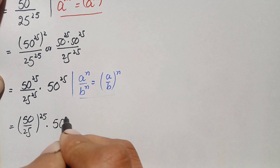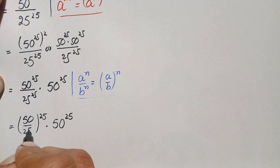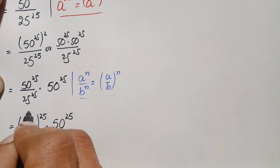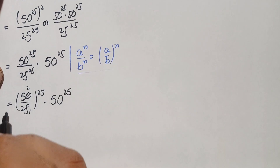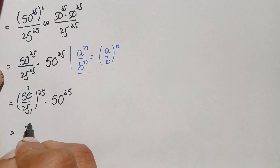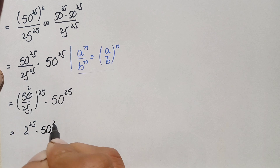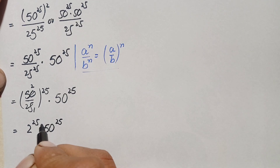Now we simplify: 50 divided by 25 equals 2. So this number becomes 2 raised to power 25, times 50 raised to power 25. Again, both numbers have the same power.